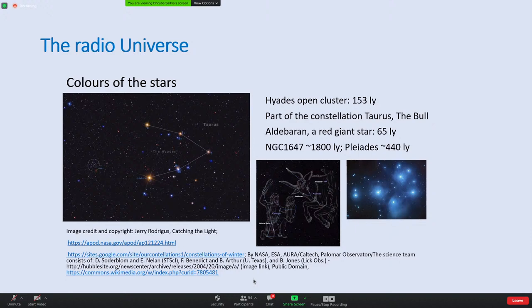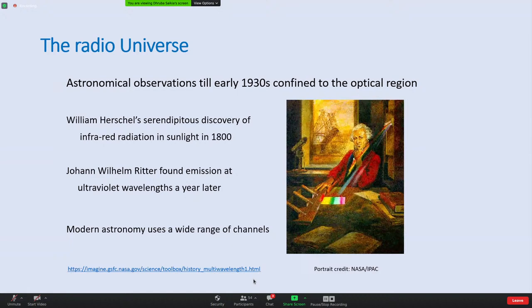For thousands of years, man was confined to studying the heavens in the optical region of the spectrum, with only brief forays into the infrared and ultraviolet. It was William Herschel, a refugee musician from Hanover who later became the Astronomer Royal, who discovered serendipitously infrared radiation from the sun by putting a thermometer beyond the red part. Surprisingly he didn't explore the ultraviolet; that was left to Johann Wilhelm Ritter, who discovered ultraviolet emission about a year later.